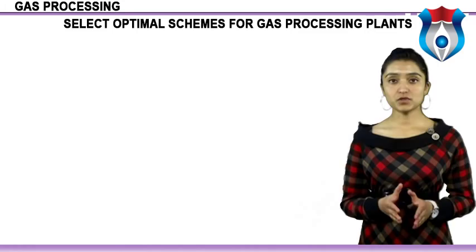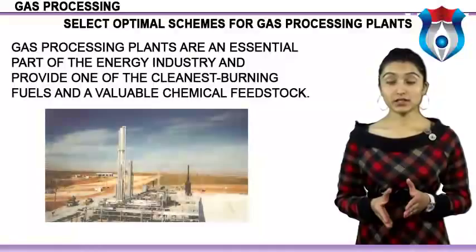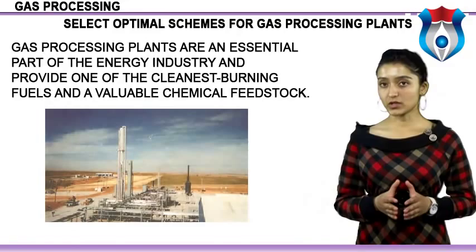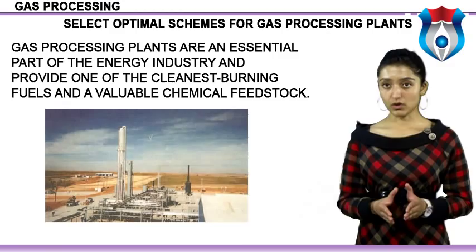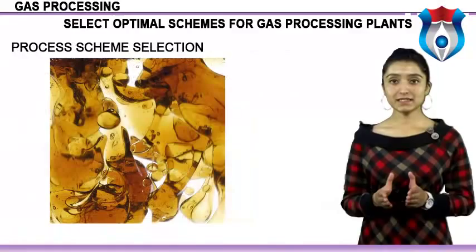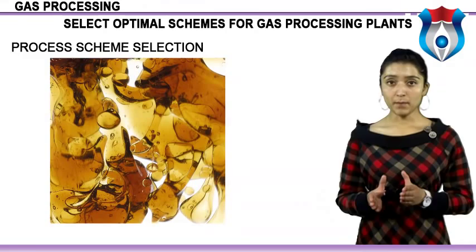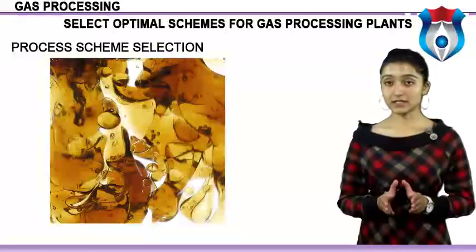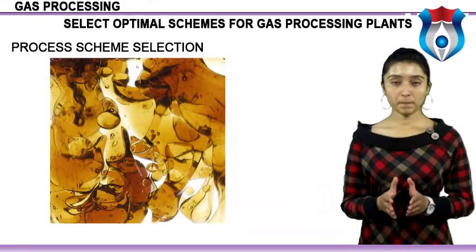Gas processing plants are an essential part of the energy industry, providing one of the cleanest burning fuels and a valuable chemical feedstock. Their importance and complexity have increased over the years due to their use as a feedstock source and integration with petrochemical plants. Process scheme selection usually begins with a design basis specifying the general plant configuration, feed characteristics (especially H2S, CO2, and mercaptan concentrations), and product specifications including maximum concentrations of sulfur and CO2 in the products.